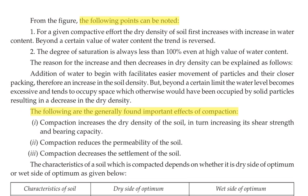The reason for the increase and then decrease in dry density can be explained as follows: addition of water initially facilitates easier movement of particles and their closer packing, therefore increasing soil density. But beyond a certain limit, water becomes excessive and tends to occupy the space which would otherwise be occupied by soil particles, resulting in a decrease in dry density.